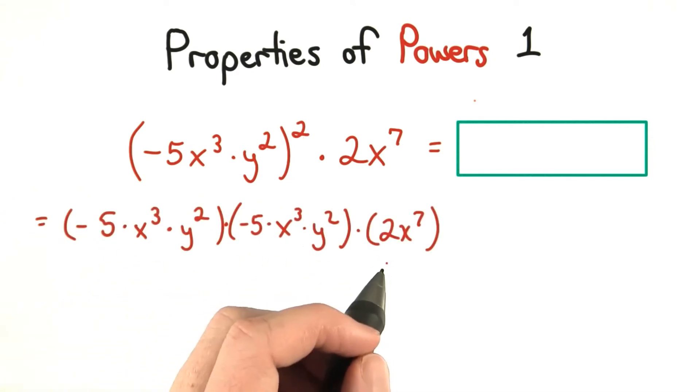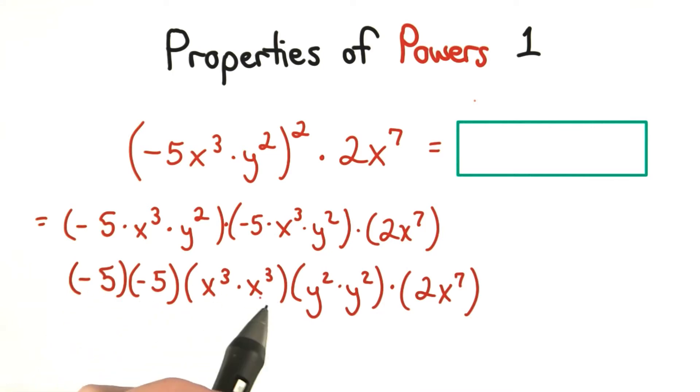Now that I have a product of factors, I can regroup the bases that are alike. So I have 2 negative 5's, 2 x cubed's, and 2 y squared's multiplied together.